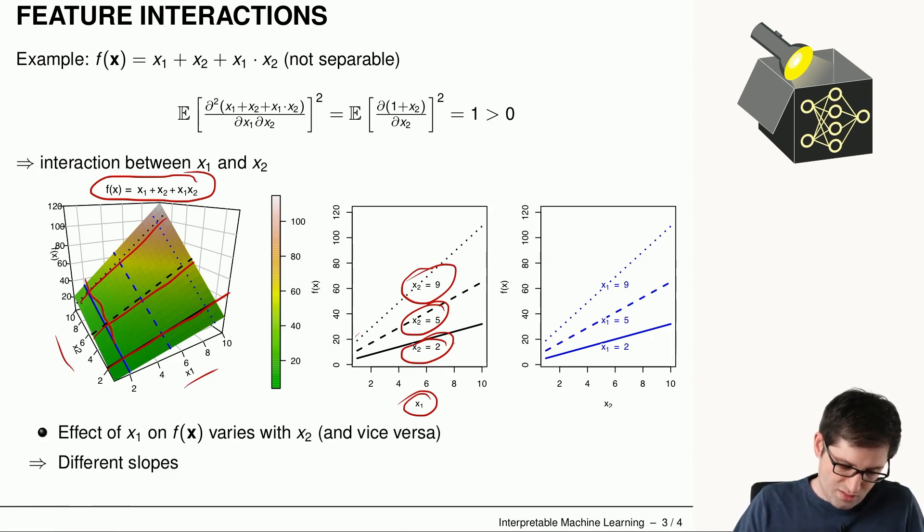If we have slices and look at three different values of x1, like these three values here, we end up in three different slopes. So the effect of x1 on the function varies with different values of x2 and vice versa.